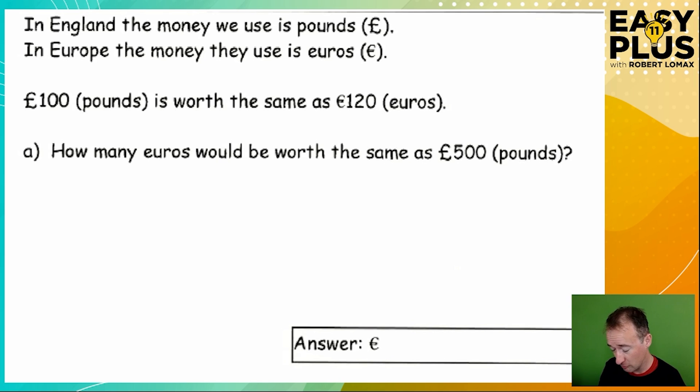In England, the money we use is pounds. In Europe, the money they use is euros, of course. And we read that £100 is worth the same as €120. Of course, in real life, this changes constantly. There are various different ways of doing this, but in essence, this is a ratios question.